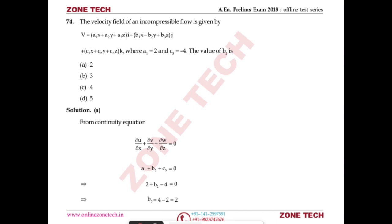Question on velocity field of incompressible flow: V = (a1x + a2y + a3z)i + (b1x + b2y + b3z)j + (c1x + c2y + c3z)k. Given a1 = 2 and c3 = −4, find the value of b2 using the continuity equation for incompressible flow: a1 + b2 + c3 = 0, so b2 = 2.